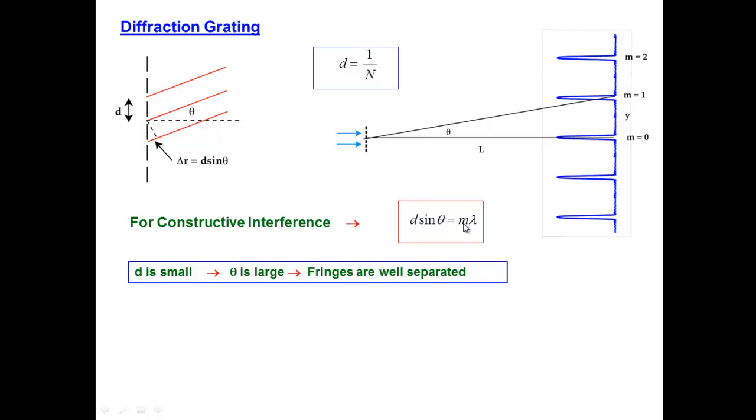But you can see right away that if d is small in this equation, since the right-hand side for a particular choice of m, maybe m equals 1, is a constant, if d is small, then theta gets large. It has to in order for their product to be a constant. And a large theta means that these fringes are well separated, that there will be a large angle between the central one at theta equals 0 and the next one.